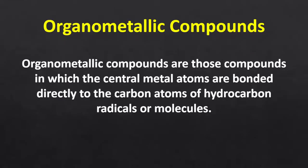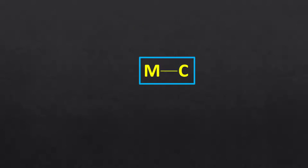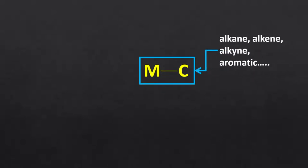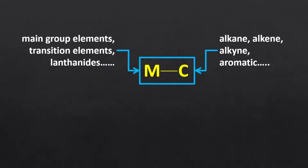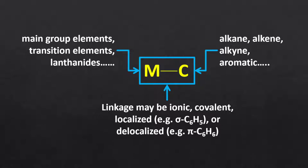Organometallic compounds, as the name implies, are those organic compounds which contain metal. Essentially, in an organometallic compound, the central metal atom is bonded directly to a carbon atom of the organic moiety — that is, the carbon atoms must be part of a hydrocarbon like an alkane, alkene, or aromatic. The central metal may belong to any block of the periodic table but must be more electropositive than carbon. The bonding interaction between the central metal atom and the carbon atom may be ionic, covalent, delocalized, or localized in nature.